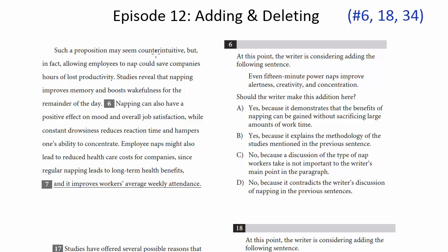Well, let's see. Let's see where we are. Such a proposition may seem counterintuitive, but in fact, allowing employees to nap could save companies hours of lost productivity. Studies reveal that napping improves memory and boosts wakefulness for the remainder of the day. Even 15-minute power naps improve alertness, creativity, and concentration. Napping can also have a positive effect on mood and overall job satisfaction. Now, we're talking about napping here and the benefits of napping and why companies might want to allow their employees to nap.